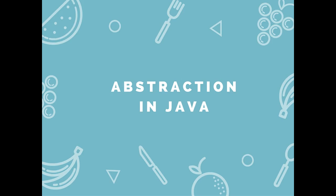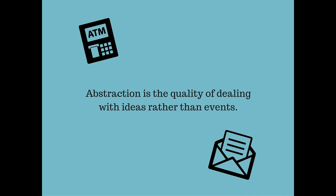Hey everyone, in this video we will try to explain abstraction in Java to you. Now what exactly is abstraction? Abstraction is the method of hiding certain details and showing only essential features of an object to the user. What this means is that abstraction lets you focus on what an object does and not how it does what it does.